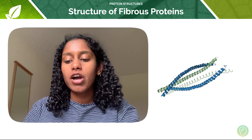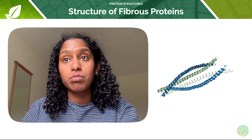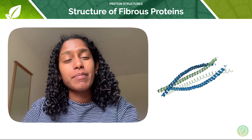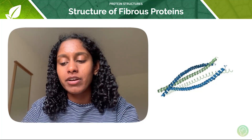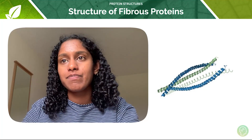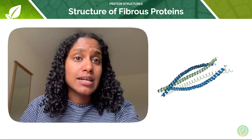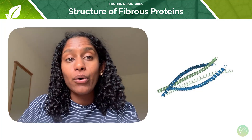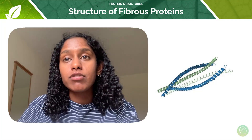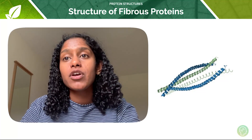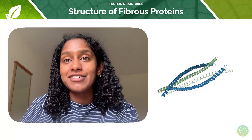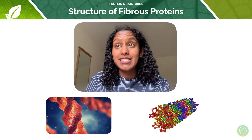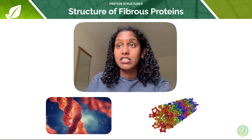As a result of their insolubility, fibrous proteins do not function well as metabolic proteins. They are better as structural proteins, because they're not very soluble and wouldn't be able to pass through cell membranes. Examples of fibrous proteins include keratin and collagen. Keratin provides structure to hair and nails, and collagen is a type of connective tissue found in the body.